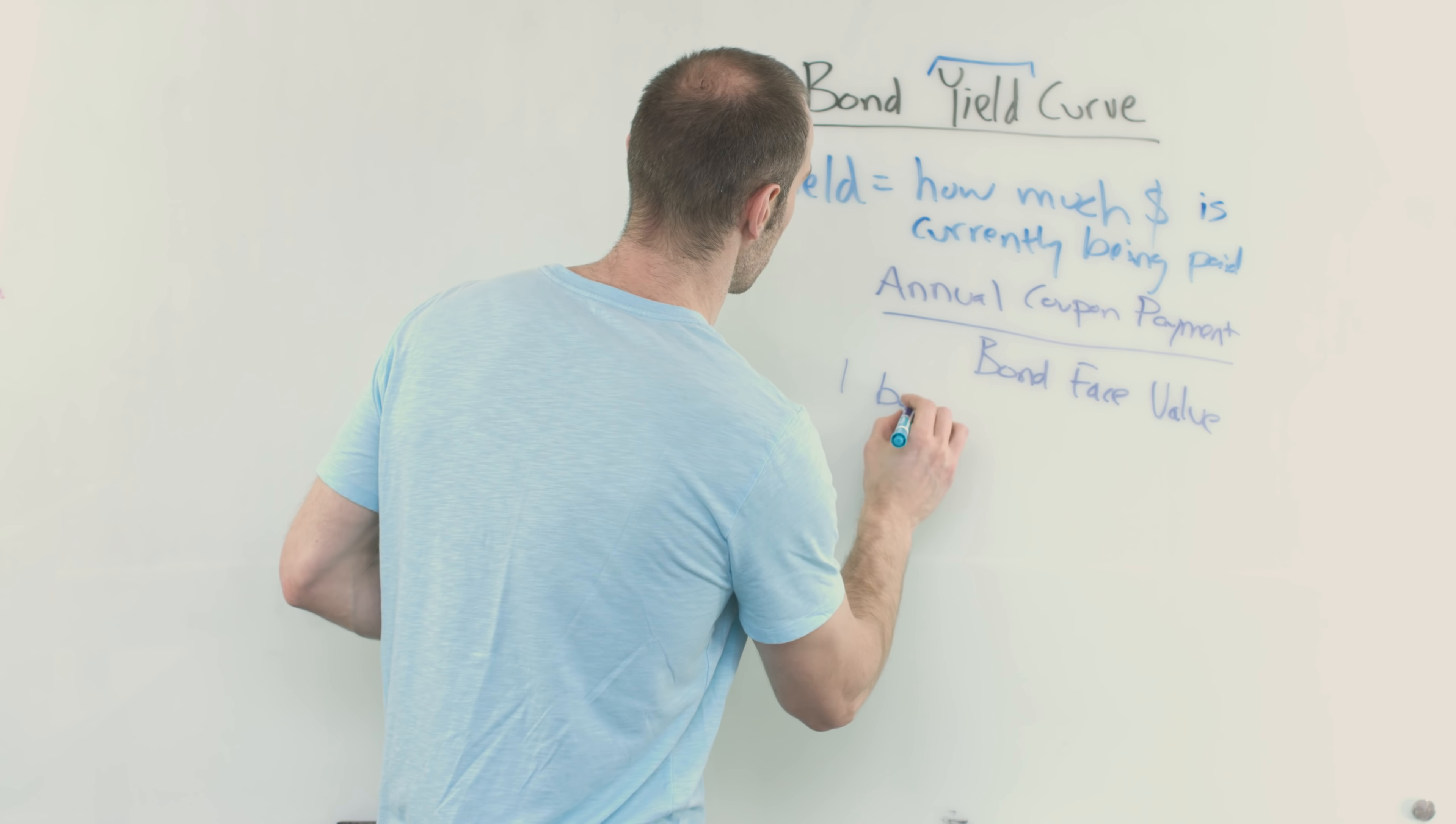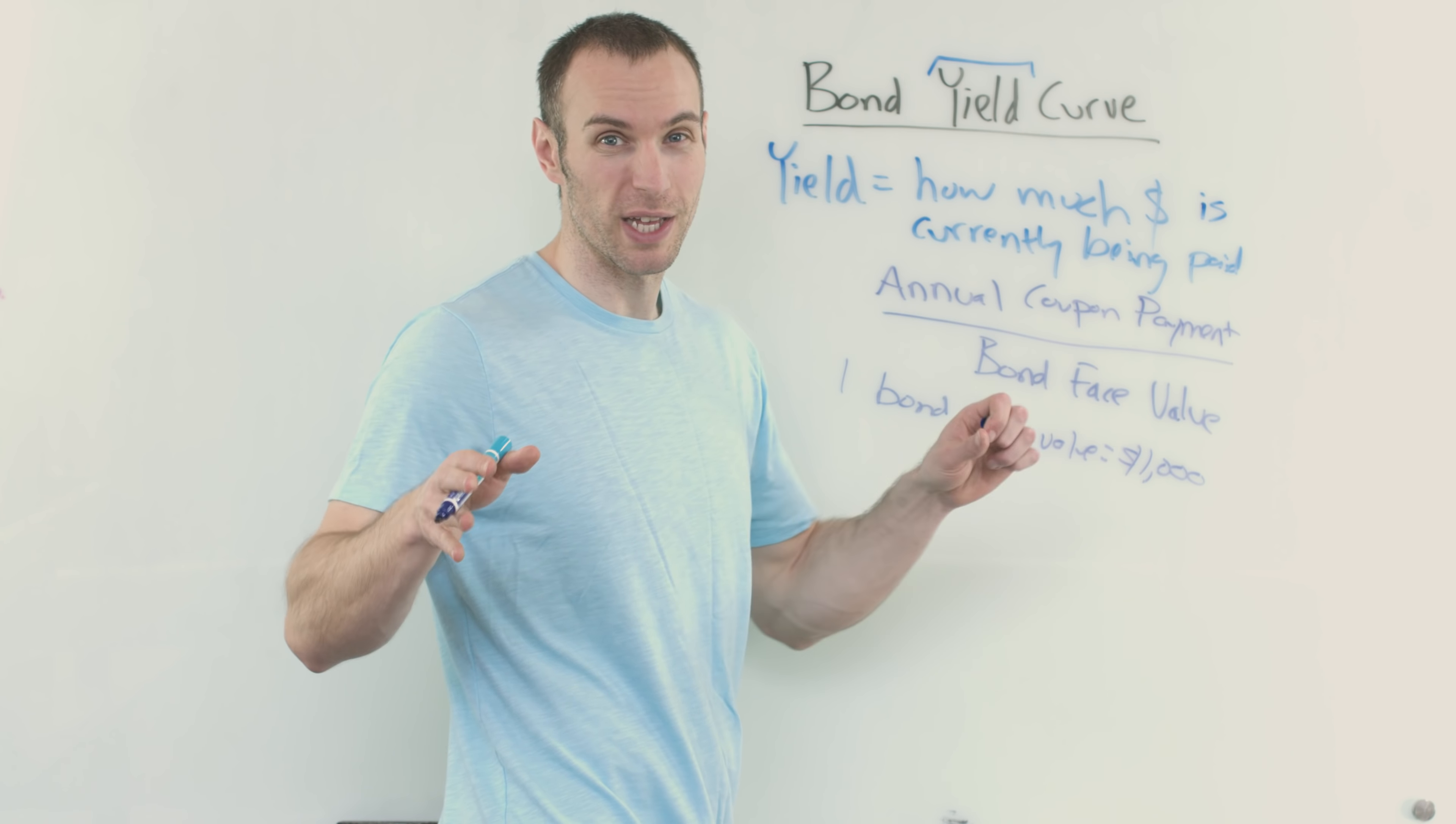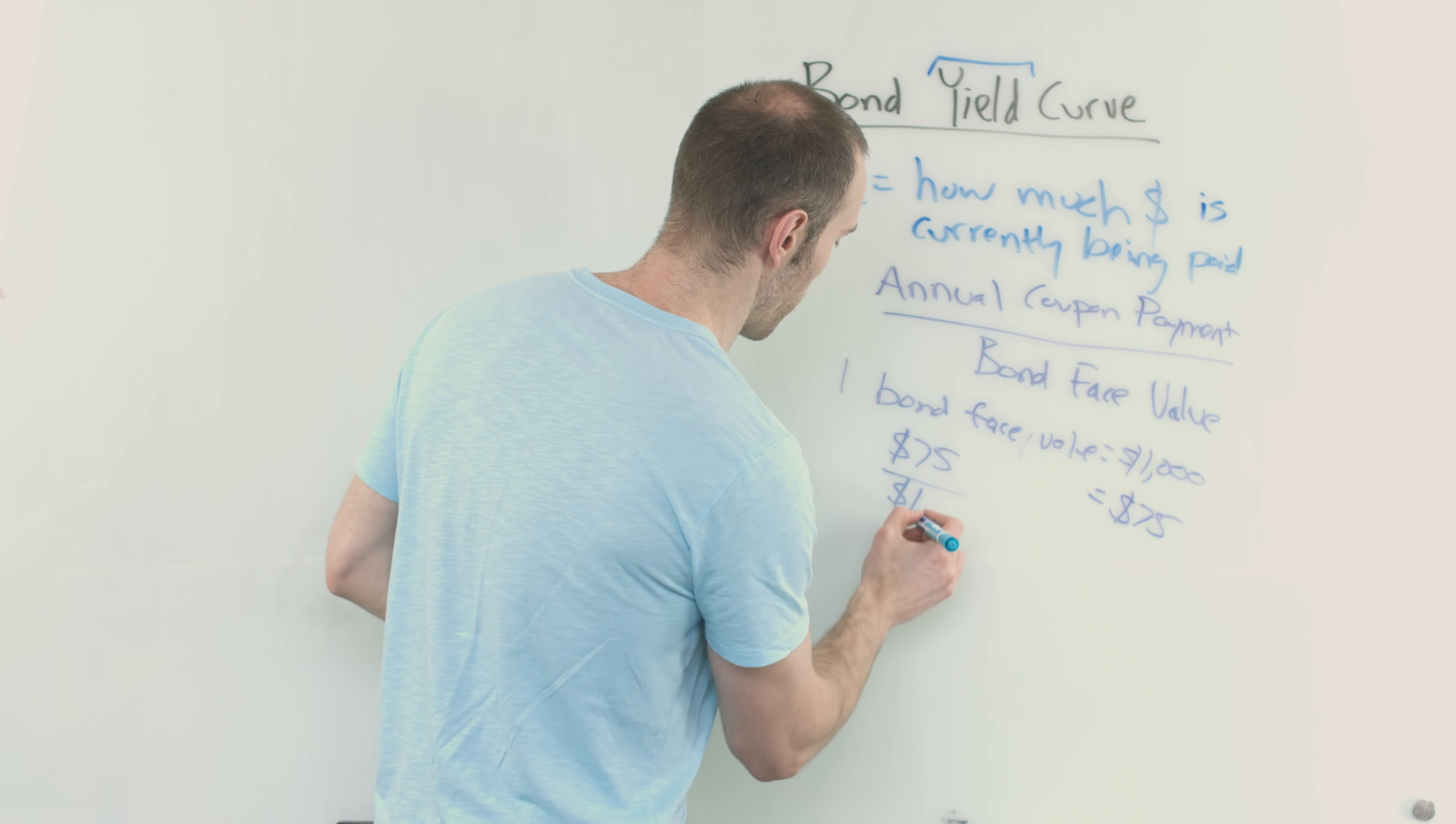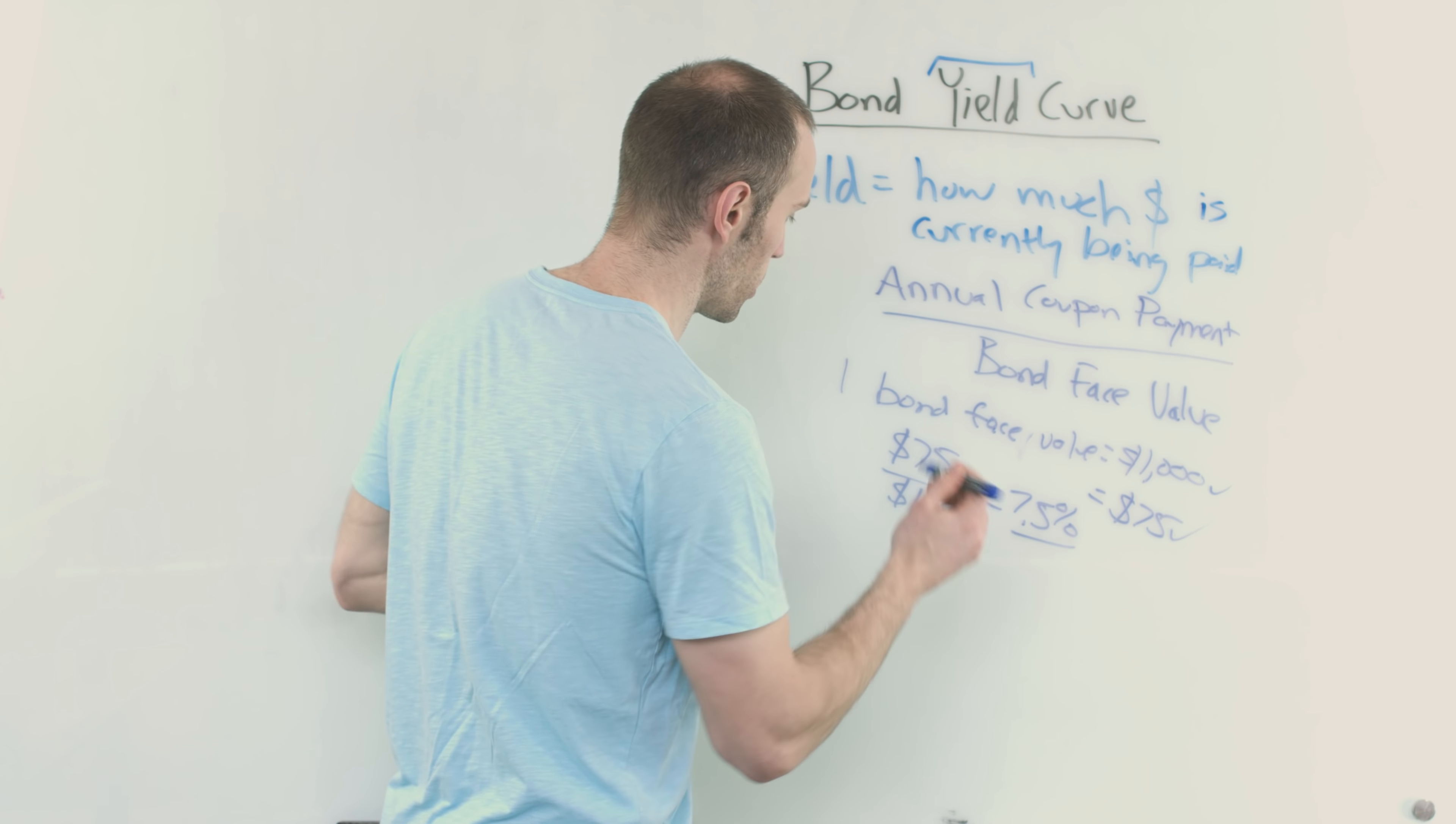If you had one bond that had a face value of $1,000, and let's say you made annually $75 on it, then what would the yield on that be? Well, you would just take the $75, divide that by $1,000. So again, annual coupon payment $75 divided by bond face value $1,000, and that's gonna give you a 7.5% yield. So this is how you calculate the yield. Nothing fancy, nothing complicated about it.